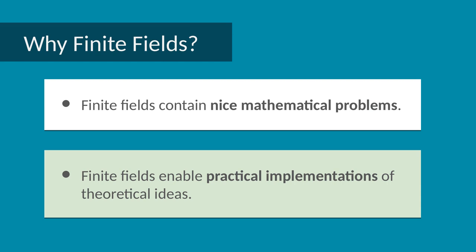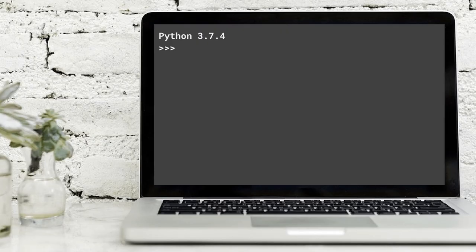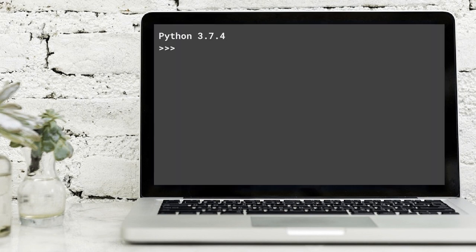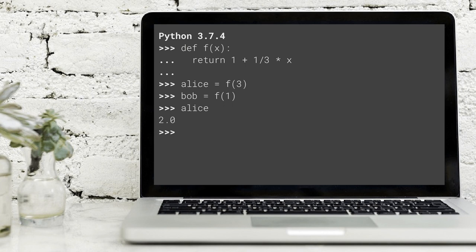In theory we have a perfect method to share the secret code. Now let's get practical and implement this in simple Python code. Internet law requires me to remind you not to implement your own crypto libraries. Let's try it anyway. For this example, the secret value is 1, and the function for the line is f = 1 + 1/3 times x. We give Alice the secret share f(3) and Bob f(1). As expected, Alice received 1 + 1/3 times 3, or 2, while Bob received 1 + 1/3 times 1, which is 1.33333333.